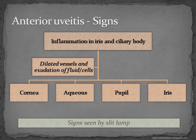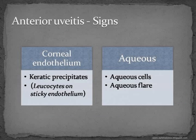Signs in anterior uveitis: anterior uveitis is inflammation in the anterior part of the uveal tissue, that is the iris and ciliary body. As in any inflammation, the vessels will dilate and there will be exudation of fluids and cells. This exudation will present in various ways in the cornea, aqueous, vitreous and iris. These signs are best seen by slit-lamp examination. The corneal endothelium — that is the back of the cornea — will have keratic precipitates. These are leukocytes from the dilated vessels of the iris and ciliary body, passing through the aqueous and settling or sticking on to the endothelium. These are very specific signs of inflammation.